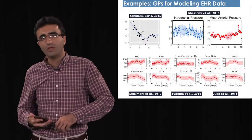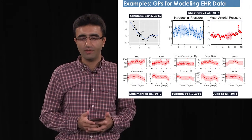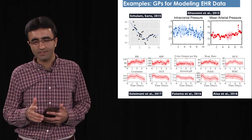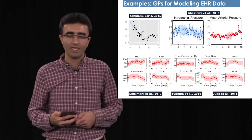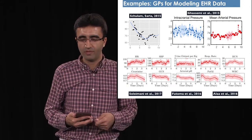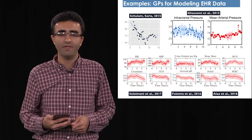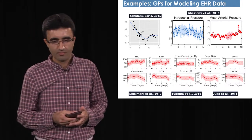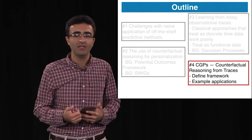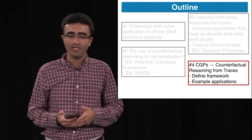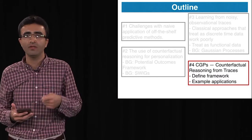There are many examples of using GPs to fit EHR signals or clinical data in general. These signals can be very complicated — some are very sparse, some more frequently sampled — and GPs generally fit well to this kind of data. Suchi will now come back to talk about using Gaussian processes and the potential outcome framework for counterfactual reasoning on clinical data.